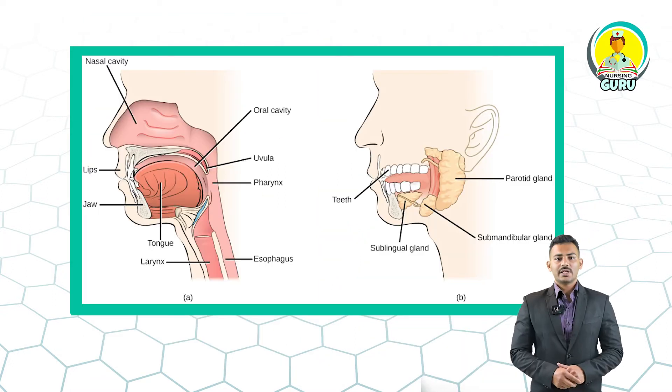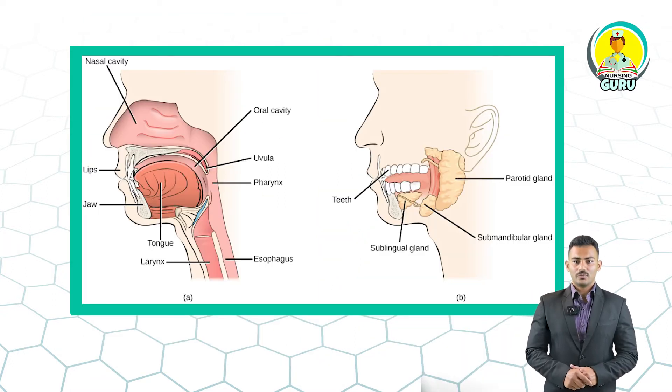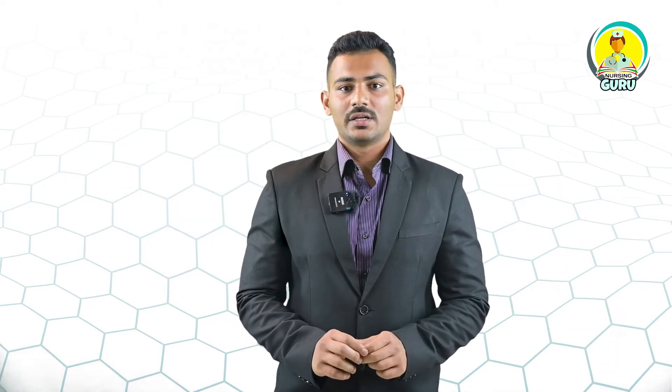The mouth is the entry point of food and the first part of the digestive system. The mouth comprises teeth and salivary glands. Teeth help to crush, grind, and tear the food, whereas the salivary glands secrete saliva, which helps to moisten the food.